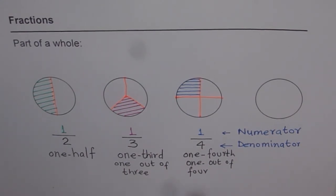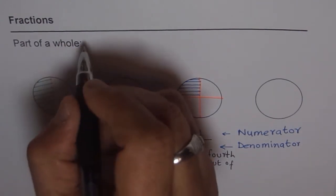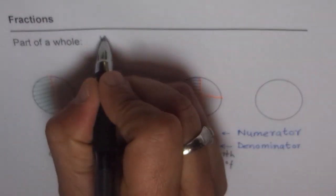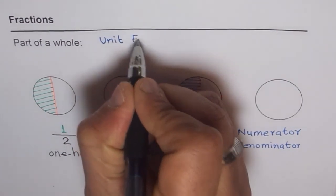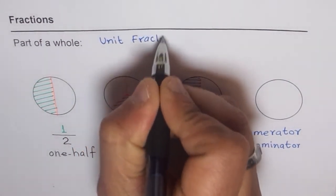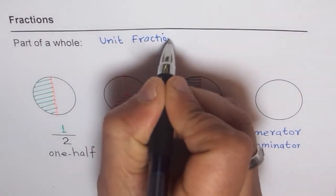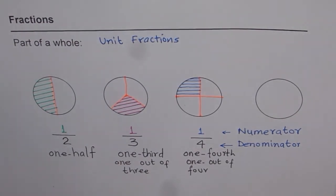Now these are special fractions — you can see all the numerators are one, so we also call them unit fractions. Unit fractions are the fractions where the numerator is one.